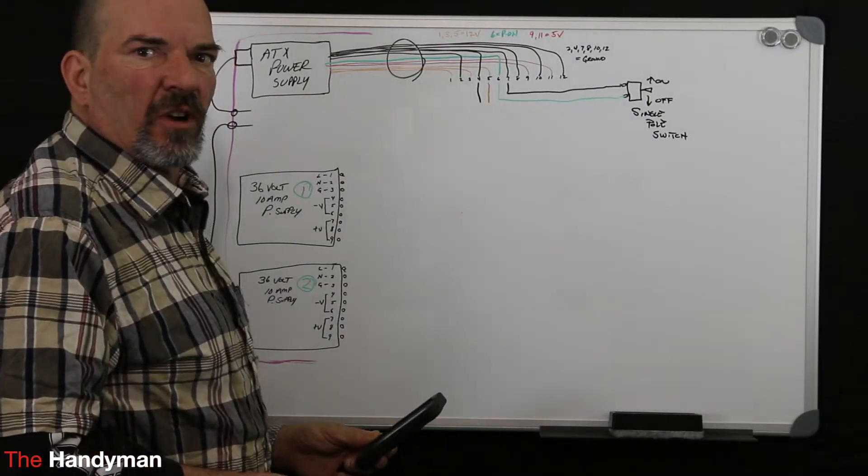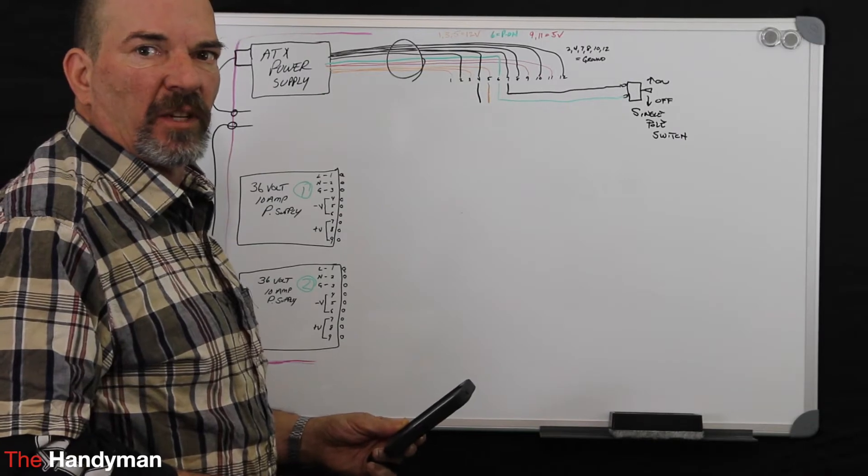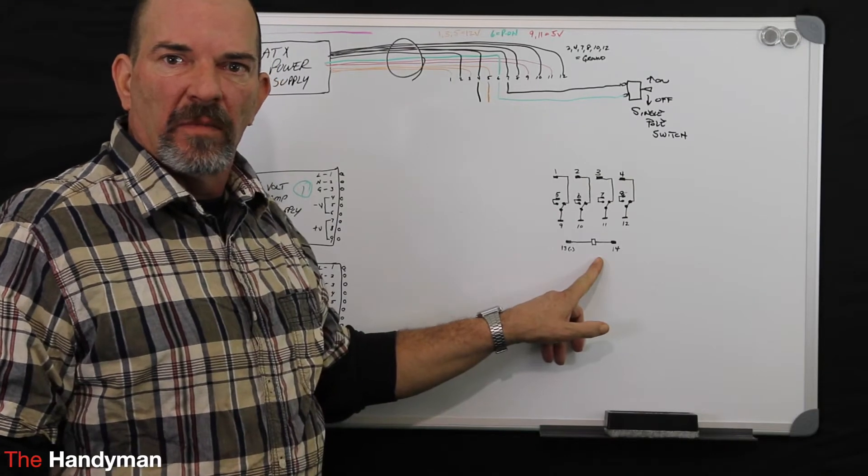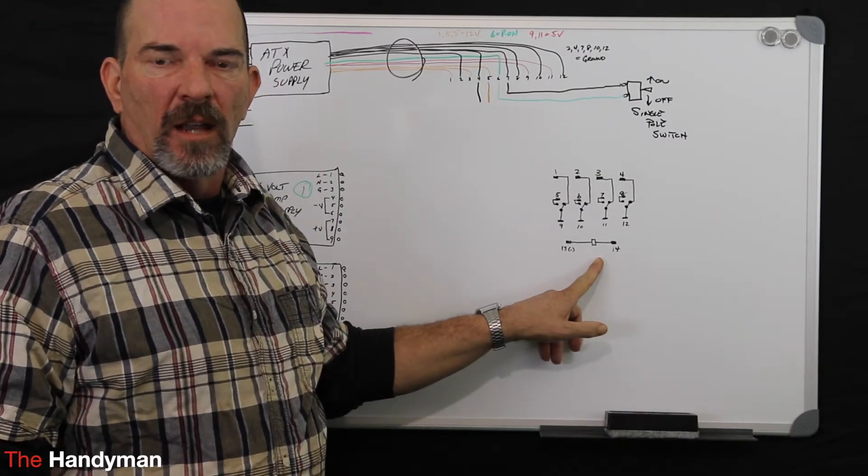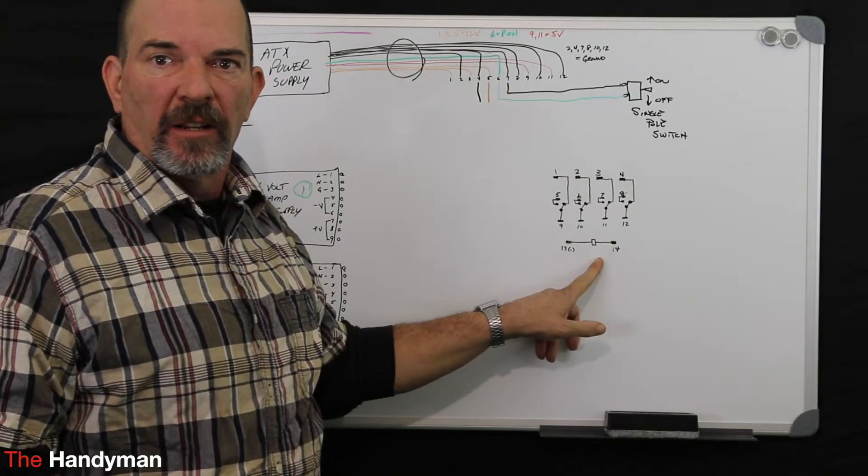First, what I'm going to do is draw off to the side exactly what the drawing looks like on the top of the relay. Now that I've drawn the diagram that's on the relay, I'm going to explain to you what it means, and I'll zoom in on this for you while I explain it.